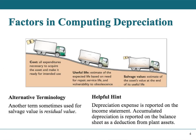Some factors you need to know: first, cost — discussed in Learning Objective 1. Then useful life, which is estimated by management based on needs for repair, service life, and vulnerability to obsolescence. For example, if printers can physically survive seven years but become obsolete in five, you'd pick five years as the useful life. You also need salvage value — sometimes called residual value or retirement value — which is an estimate of the asset's value at the very end of its useful life. Maybe we plan to sell a used asset for $10,000, or maybe it goes to the junkyard for $1,000.